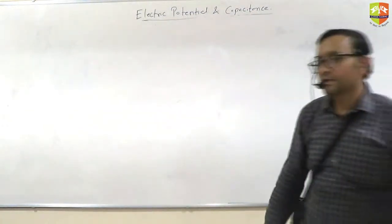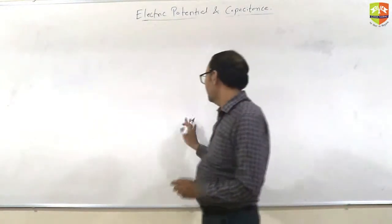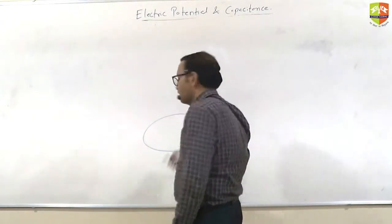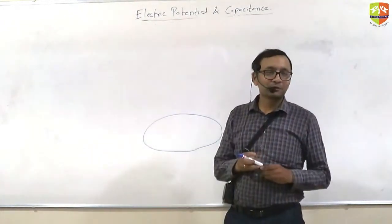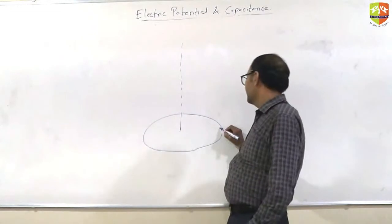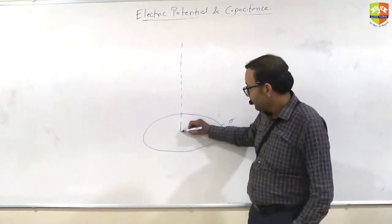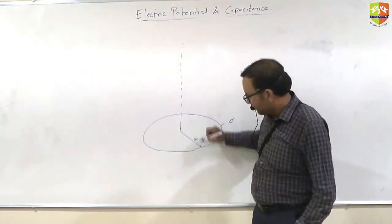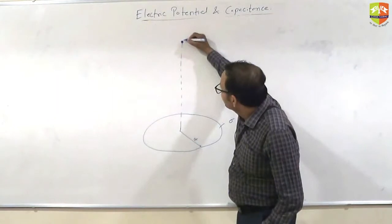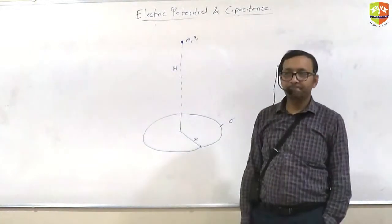Now let's take up questions. I am taking a slightly important question. This is the axis of the disk. This disk has surface charge density sigma. Radius is capital R. This disk is fixed. There is a mass small m and charge small q which is placed at a height H.